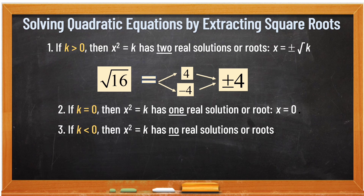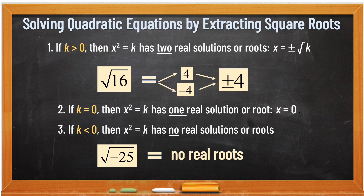Number 3: if k is less than 0, then x squared is equal to k has no real solutions or roots. Ano ba yung mga numbers na mababa sa 0? Yun yung mga negative numbers. Kapag negative yung ating k, ang answer natin ay no real roots. Like this one — square root of negative 25. Yung negative 25, paano mo hahanapan ng square root yan? Kung 25, pwede — kasi ang square root ng 25 is 5: 5 times 5 is 25, negative 5 times negative 5 is 25. Pero kung negative 25, hindi pwede. Kasi ang magiging factor nitong negative 25 ay isang positive and isang negative — hindi po pwede yun sa square root. Kaya pag ganito, lalagyan na lang natin ng no real roots. Pag negative, no real roots yung ating answer.